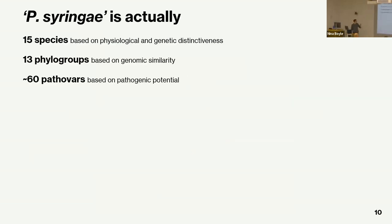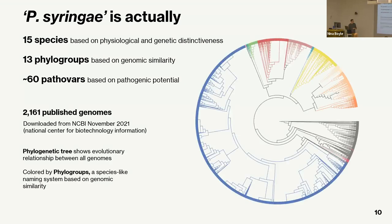We say 'Pseudomonas syringae' as if it's one thing, but it's actually a large group of pathogens made up of 15 different species, 13 different phylogroups based on genomic relationships, and 60 different pathovars based on host range and symptomology. What I show here is a phylogenetic tree built from all publicly available Pseudomonas syringae genomes — a core genome phylogeny colored by phylogroups. This is how I'll be talking about Pseudomonas syringae, because species designations in public databases are unreliable.